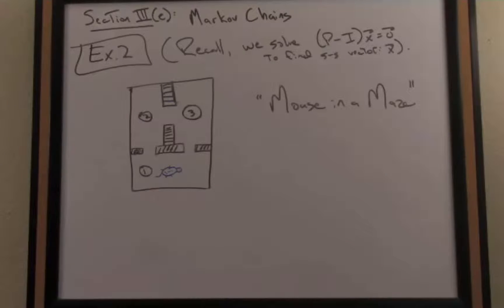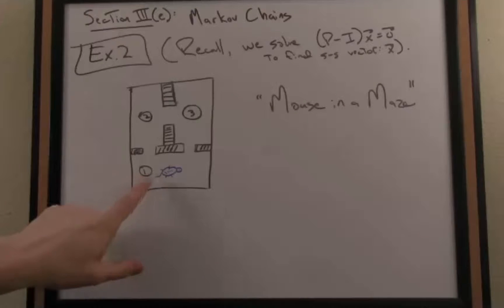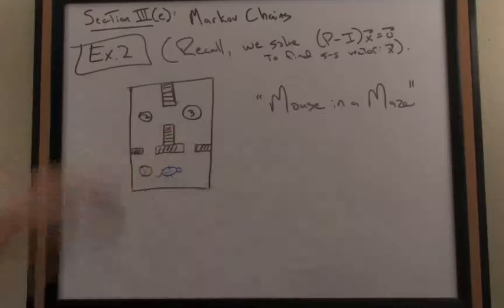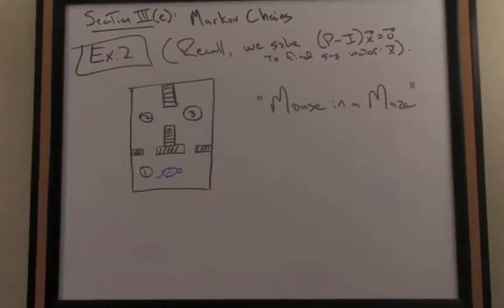What is this mouse in a maze model all about? I've depicted on the left, crudely, a mouse placed in a maze. We made the maze very simple. In the maze, there are three rooms labeled one, two, three, and the mouse is free to roam about the maze coming to and fro between the various rooms.